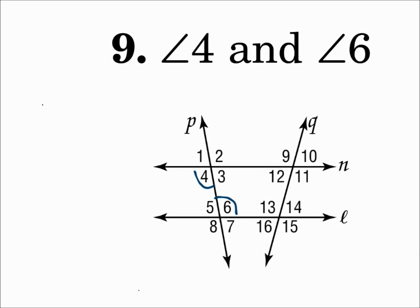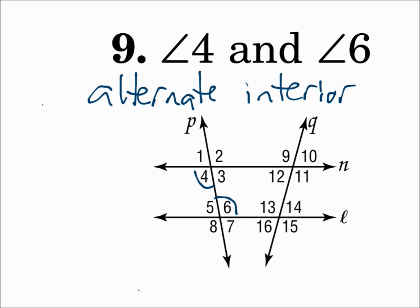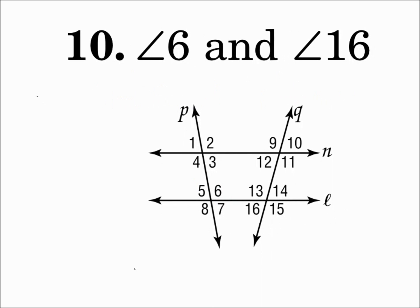Number 9: angle 4 and angle 6 — those are on transversal P, inside the two lines and on opposite corners. That's alternate interior angles. Number 10: angle 6 and angle 16 — those are on transversal L, in between the two lines on opposite corners. That's alternate interior angles.